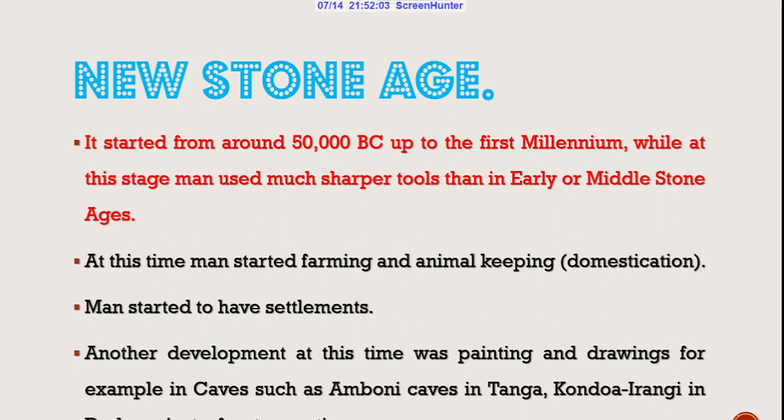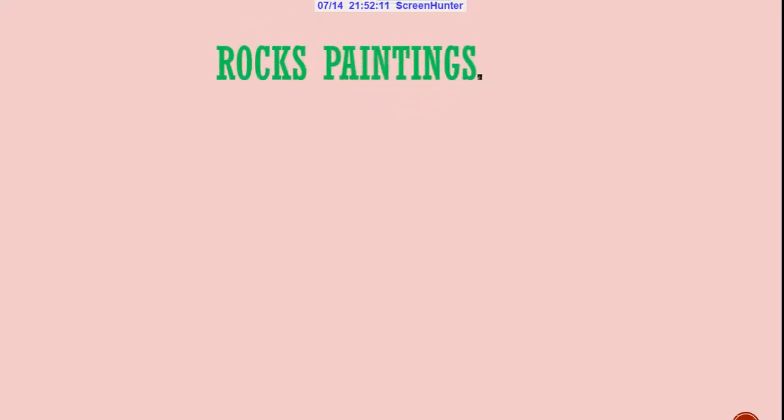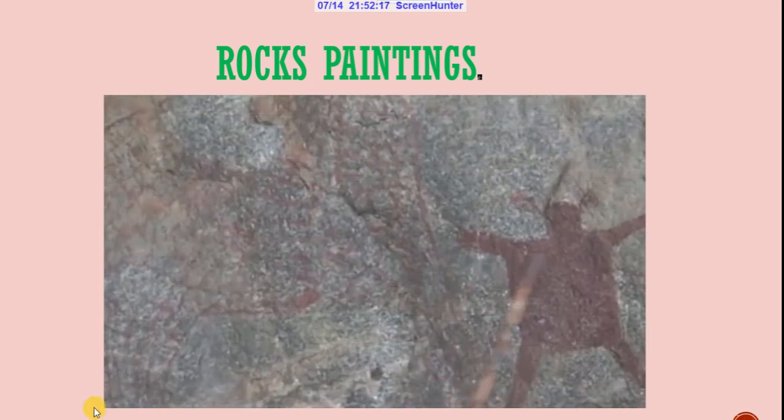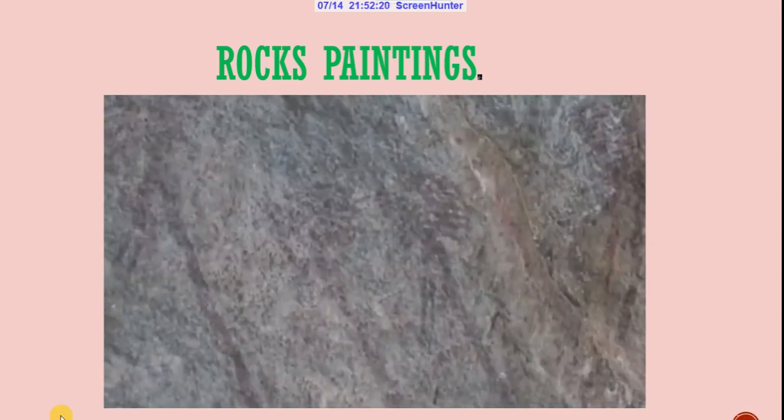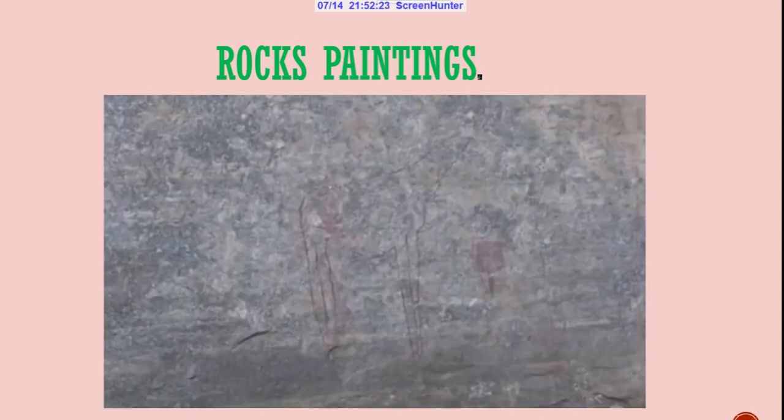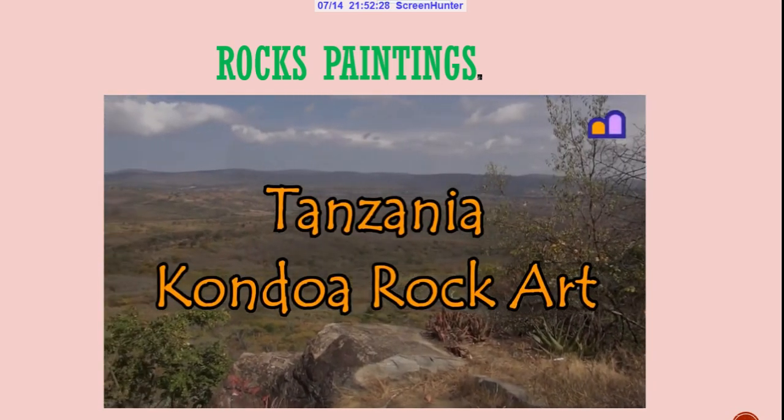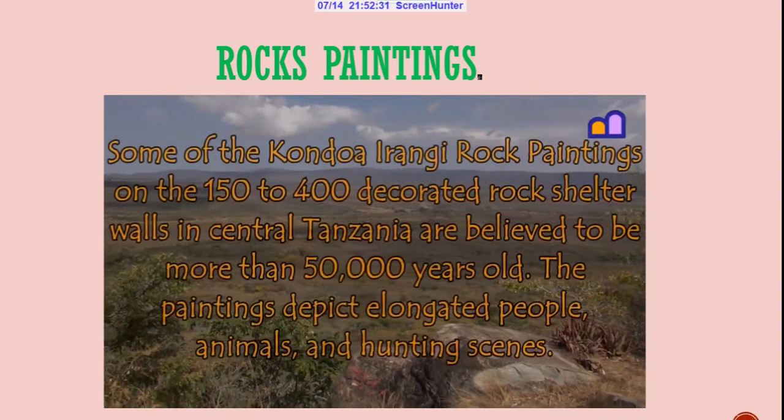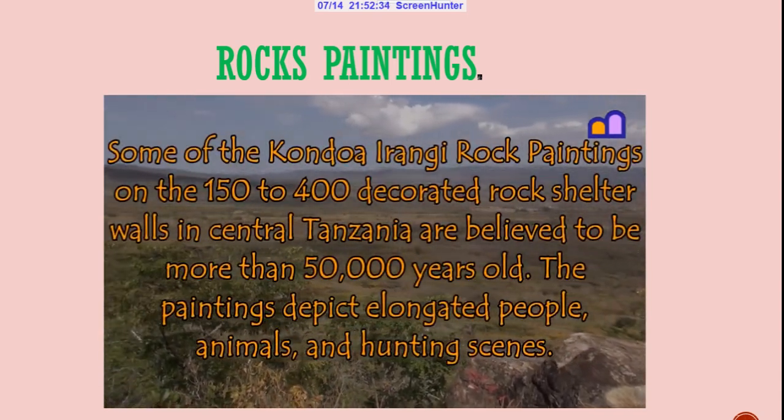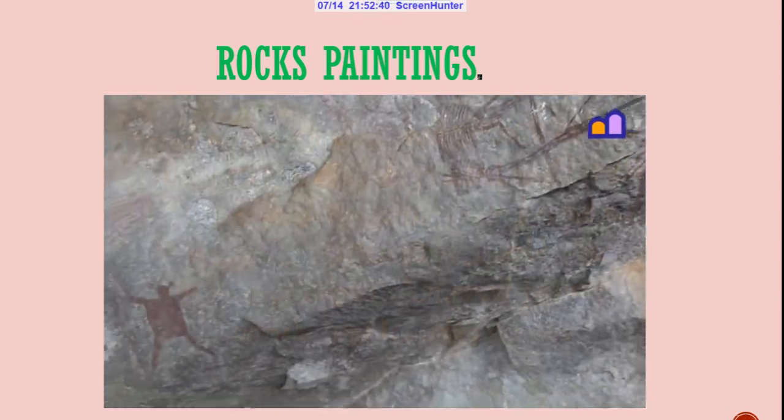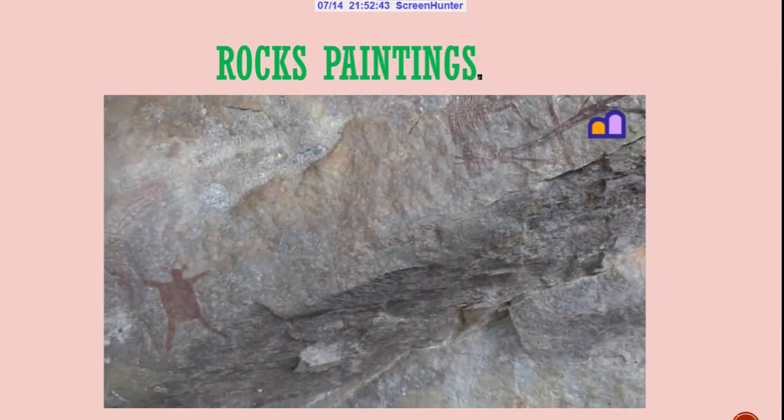Man started to have settlements in different places, especially in caves. One piece of evidence showing that man lived in caves is through the rock paintings in Amboni and Kondoa-Irangi in Tanzania, where we can see different drawings that were drawn by man. The paintings are about 50,000 years old and show the origin and history of man.